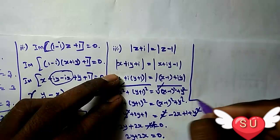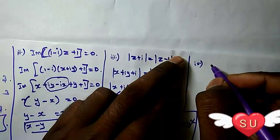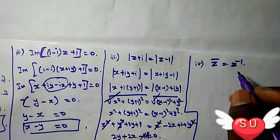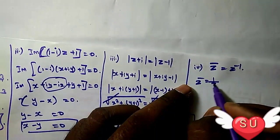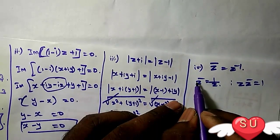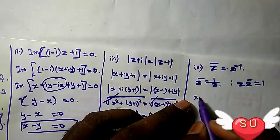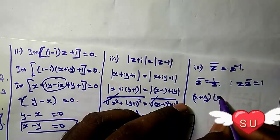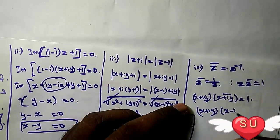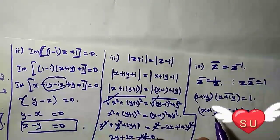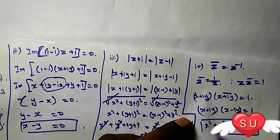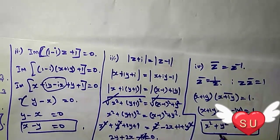Fourth problem: z̄ equals z⁻¹, or z̄ equals 1/z, so z times z̄ equals 1. Substituting z equals x plus iy: (x plus iy)(x minus iy) equals 1. Using the formula (a plus b)(a minus b) equals a² minus b², we get x² plus y² equals 1.